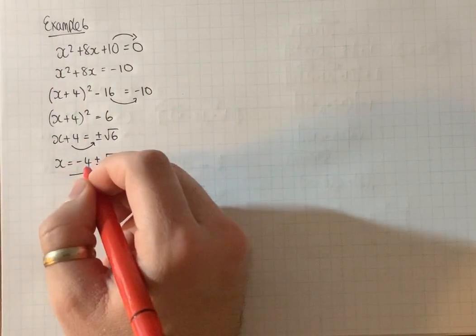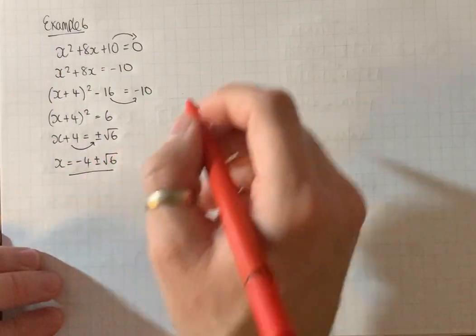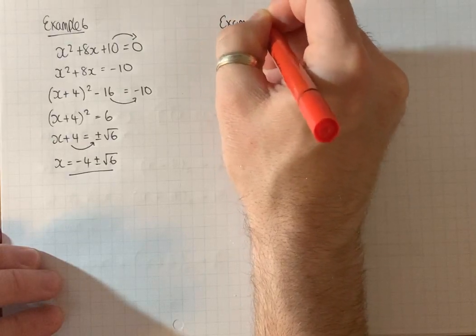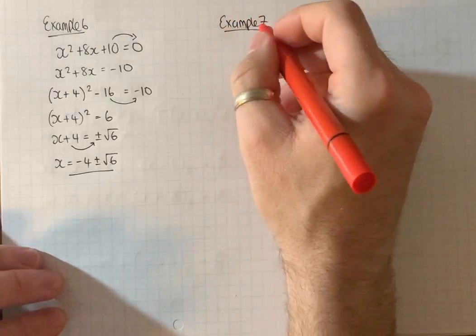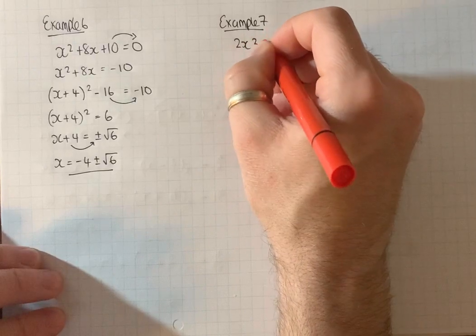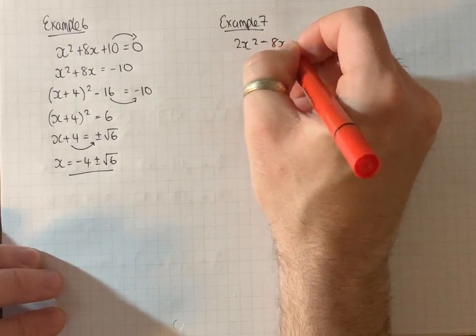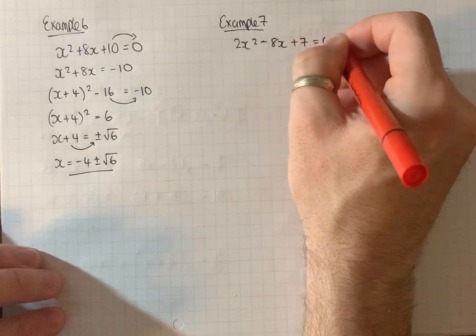We've got two solutions. Example 7. 2x squared minus 8x plus 7 equals 0.